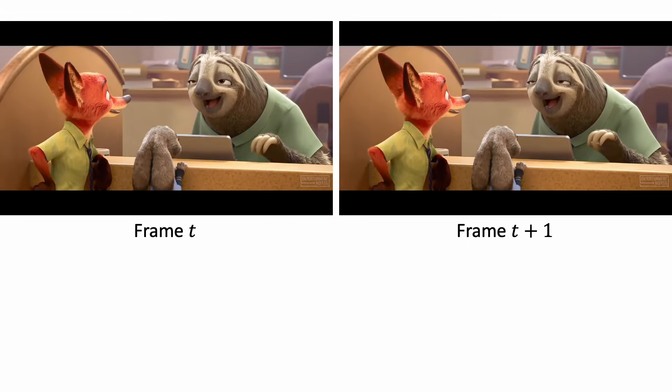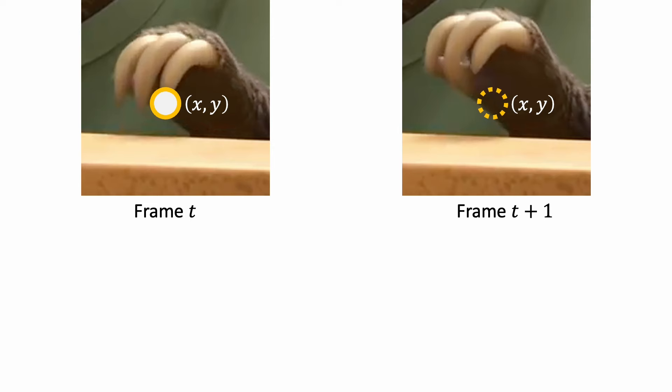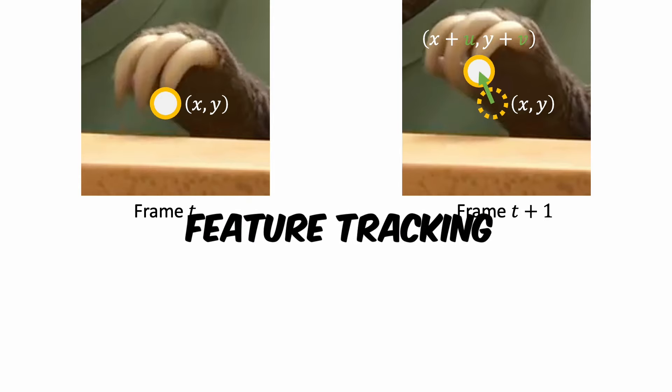Let's talk about feature tracking. Look at these two frames and focus on a particular region. Given a keypoint location at frame t, we want to know where this point goes in the next frame. We want to know the motion vector. This is the problem of feature tracking.